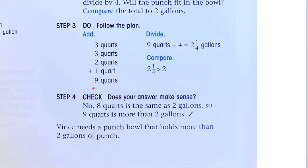Add up all the quarts, you get 9 quarts. 9 quarts divided by 4, because it takes 4 quarts to make a gallon. That's going to be 2 1⁄4 gallons.